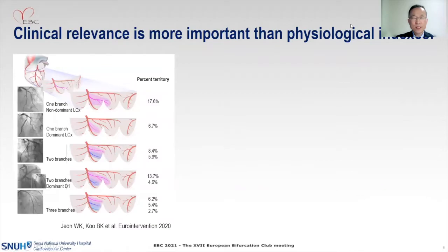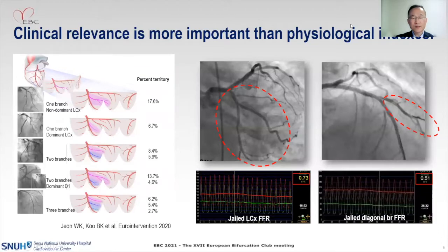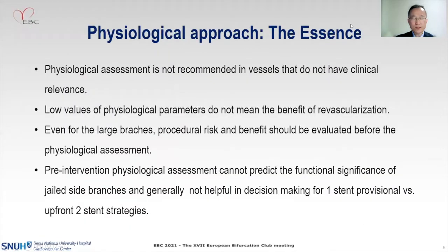We know that the side branch territory is highly variable — as shown in this figure, from 2.7% to almost 18% — and the meaning of FFR is totally different between these two vessels. So clinical relevance comes first, and that is the essential part of the physiological approach. Physiological assessment is not recommended in small vessels, and even if the measured value is low, that does not always mean there is a benefit from revascularization.